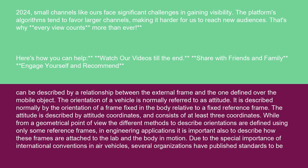The orientation of a vehicle is normally referred to as attitude. It is described normally by the orientation of a frame fixed in the body relative to a fixed reference frame. The attitude is described by attitude coordinates and consists of at least three coordinates. While from a geometrical point of view, the different methods to describe orientations are defined using only some reference frames, in engineering applications it is important also to describe how these frames are attached to the lab and the body in motion.